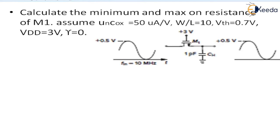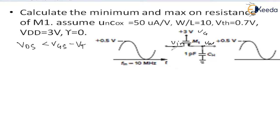First, let us determine the region of operation — whether this transistor works in the saturation region or the triode region. For the triode region, the condition is VDS less than VGS minus VT. M1 operates in the triode region because VG = 3V, which is more than VIN as well as Vout by a value greater than VTH. VIN is 0.5V and Vout is approximately 0.5V, so VG is greater than both. It works in the triode region. Since the frequency is 10 megahertz, Vout tracks VIN with negligible phase shift, due to the ON resistance of M1 and the capacitor.